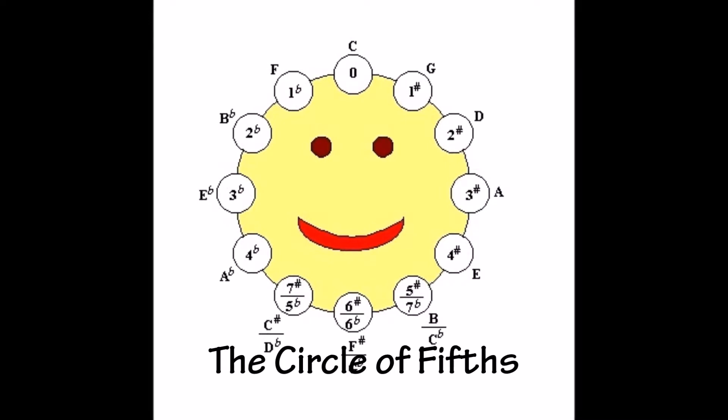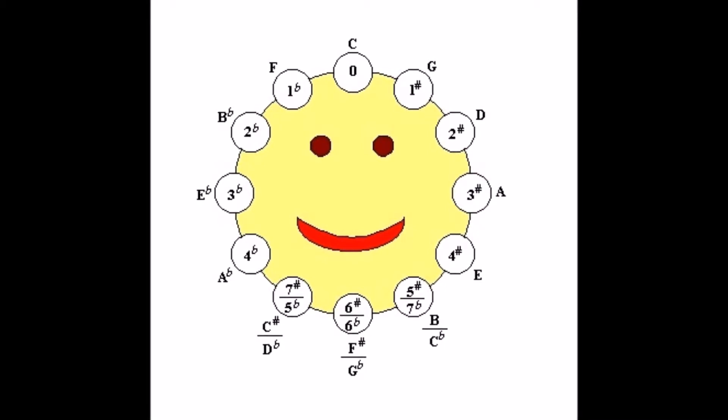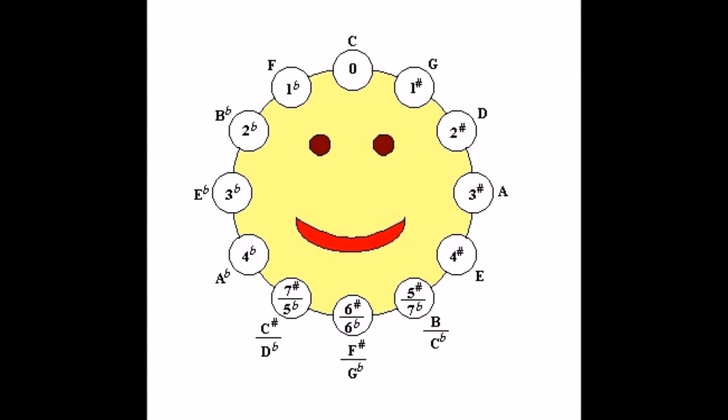Previously we learned about our friend the circle of fifths and how helpful a tool it was to figure out all 15 major keys. There are keys with sharps and keys with flats and there is the mothership of C major with no sharps or flats.